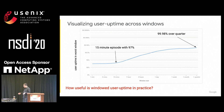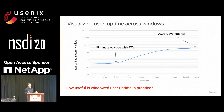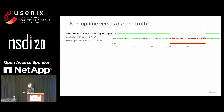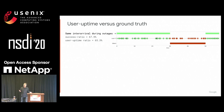Now that I've shown you this metric, let me illustrate how useful it is in practice. We have deployed this to all of our G Suite applications for about a year or more. This first set of graphs uses synthetic data — the reason being it's hard to think about whether a metric is right or wrong unless you have a notion of ground truth. So we generated data from a particular ground truth and saw how user uptime and success ratio work.